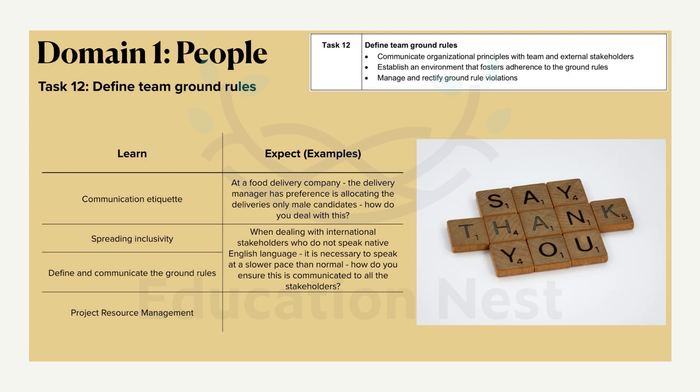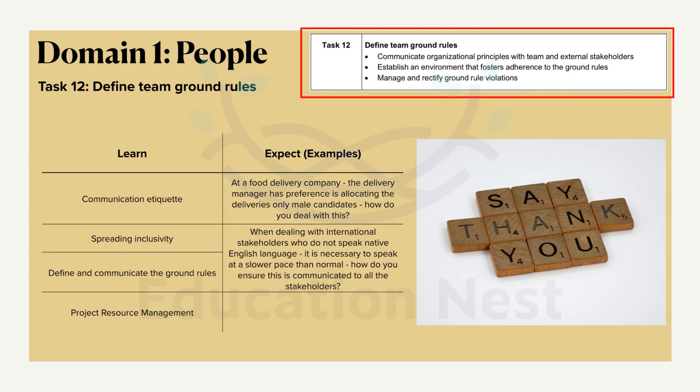We have to follow ground rules in the company. What is expected of the project manager in terms of PMI is as shown here: we have to communicate organizational principles within the team and external stakeholders, and establish an environment that fosters adherence to the ground rules. Everybody has to follow the ground rules for that particular company. Once ground rules are established, 99.99% of people — except the really notorious ones — will follow them.